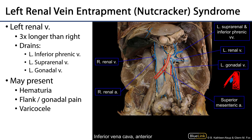With left renal vein entrapment syndrome, also known as nutcracker syndrome — because the anatomy resembles a nutcracker — we compromise blood flow from the left kidney, the left side of the inferior diaphragm, the left suprarenal gland, and the left gonad. Symptoms may include hematuria, which is blood in the urine, left flank and gonadal pain, and varicocele — varicosities of some of the testicular veins, like the pampiniform plexus becoming varicose — which can be very painful and uncomfortable.